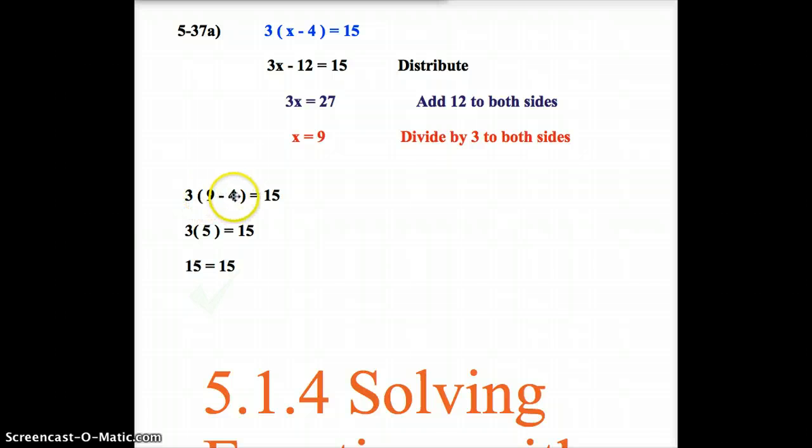3, x minus 4 equals 15. Only, you're going to notice here, instead of putting the x like was up here, I've now put in the new number that I've come up with, the answer of 9. So, I take 9 minus 4. I solve using order of operations.